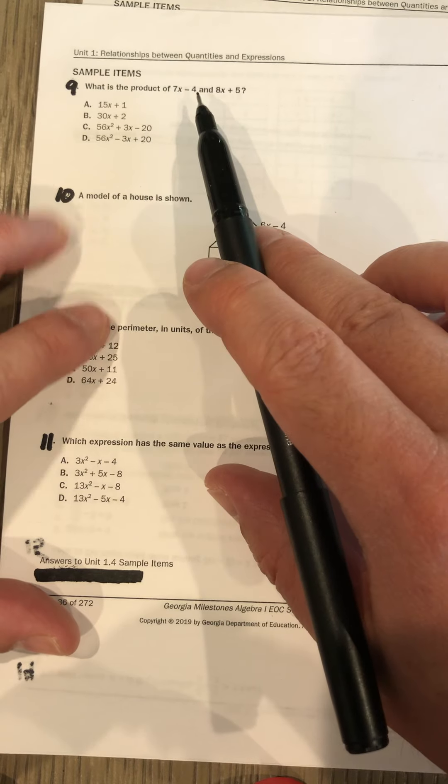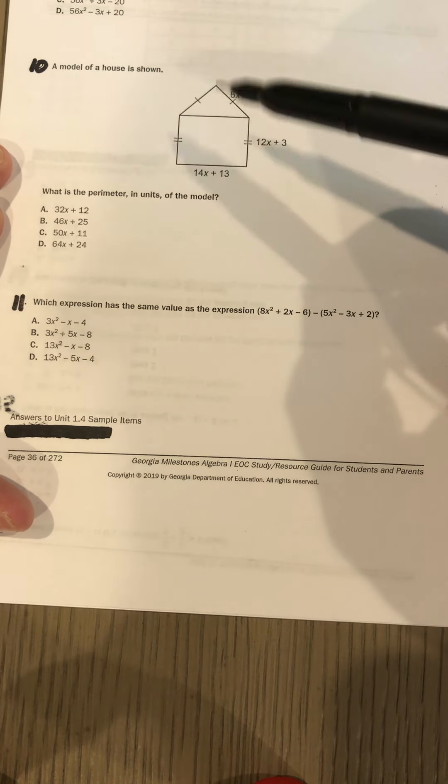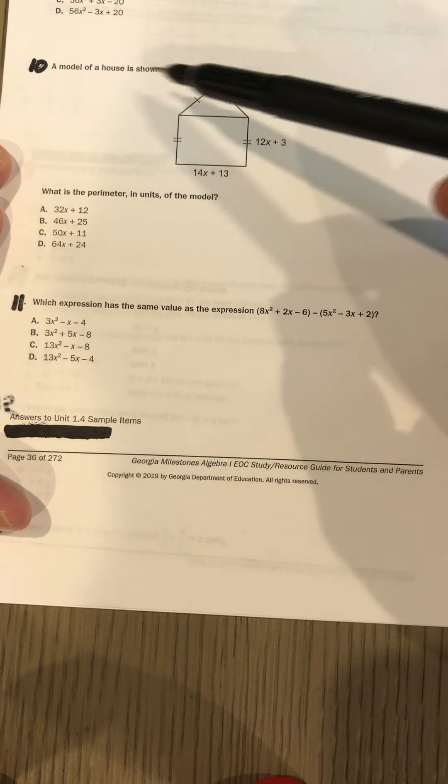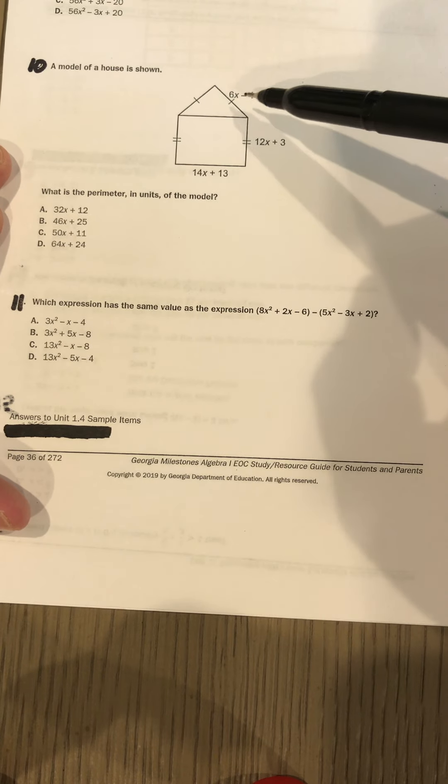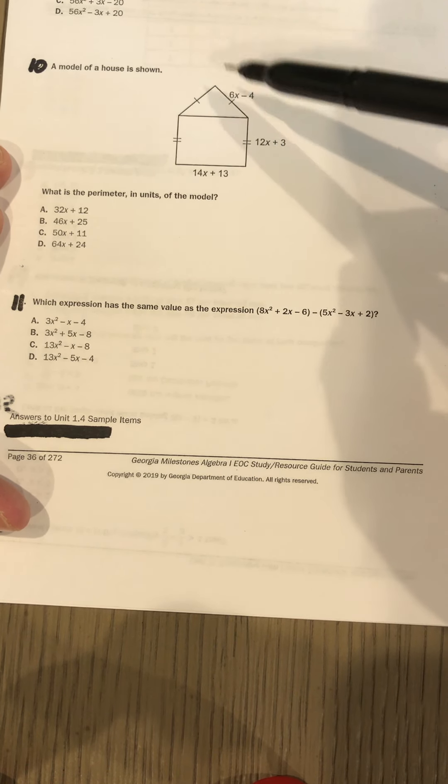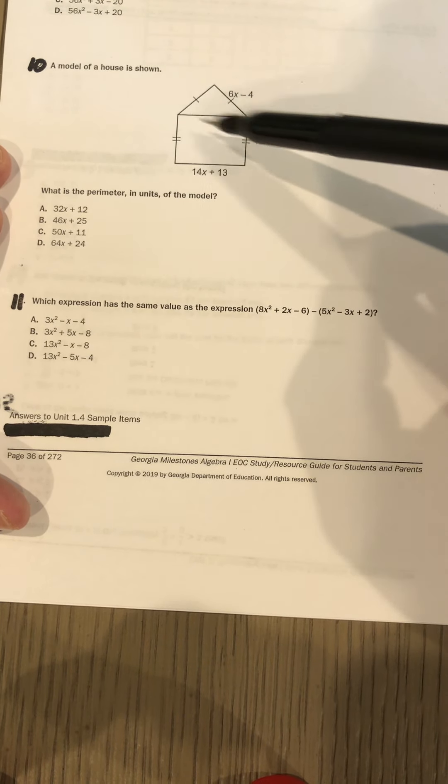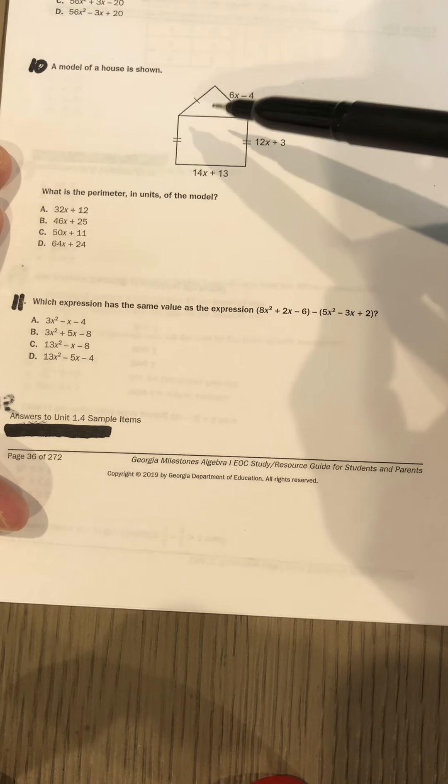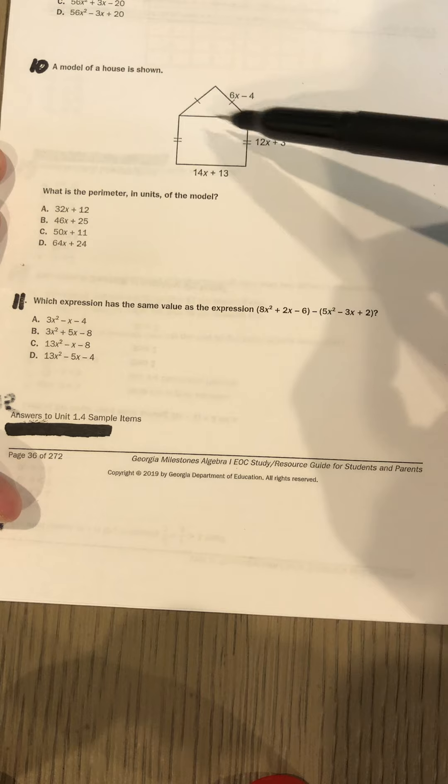Okay, last one, number ten. You've seen this problem before, at least once. So, model of the house is shown. What is the perimeter in units? Please remember that perimeter is the adding of all of the outside lines. Outside, that's not outside, that's not outside, that's inside. No, no, good—not outside. Don't do this one.